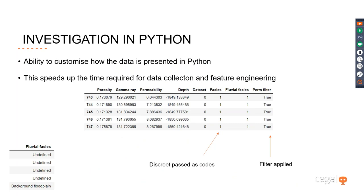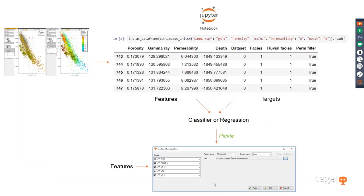It's possible to customize how the data is presented. You can customize the units or customize the discrete data — for example, if you want that as strings or as numerical values. This is because certain algorithms require you to present discrete data as a code rather than a string. With the Investigator Py, you can also bring back information to Petrel. We could build a classifier or regressor using many different machine learning packages, then pickle that model, bring it back to Petrel where it can predict new data, and we'll show this as part of the demo.